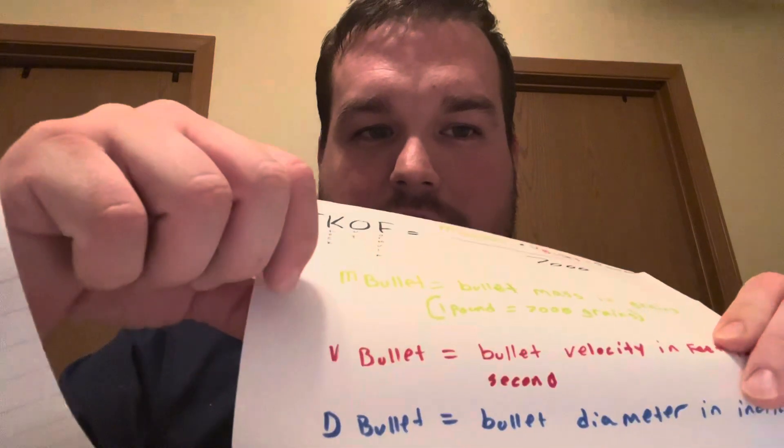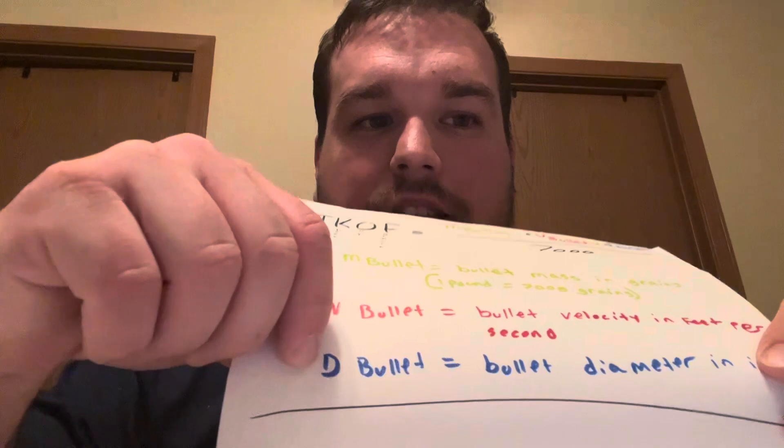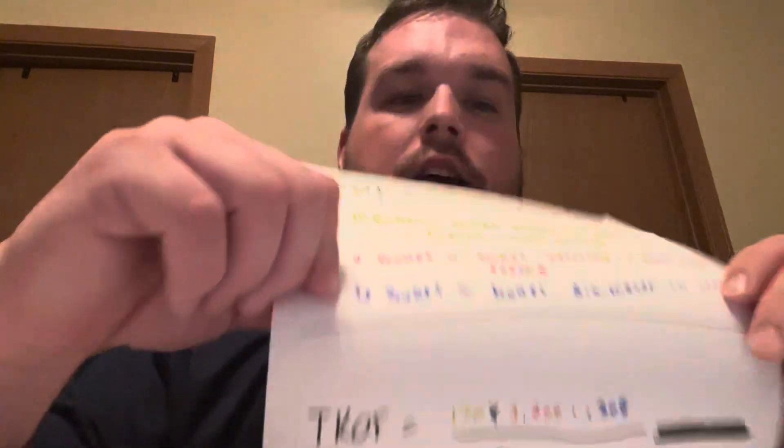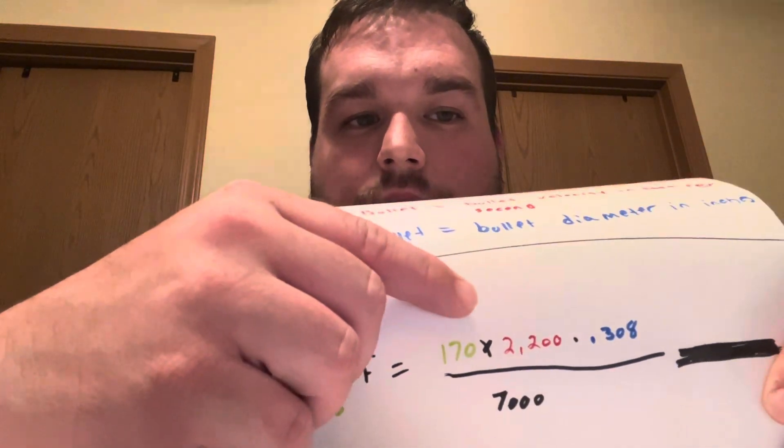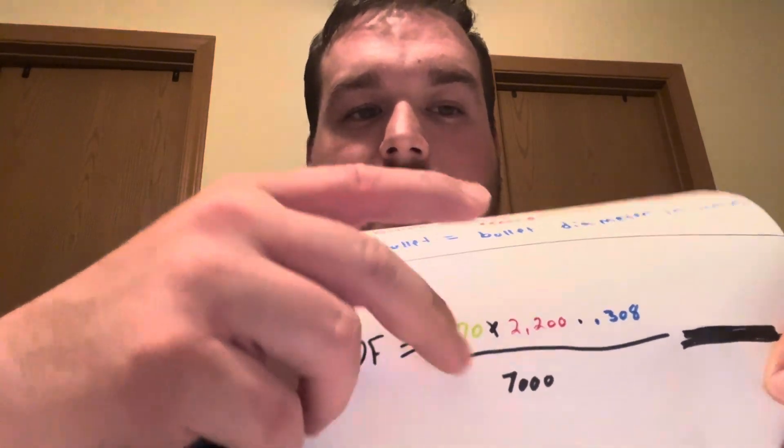With that being said, M is your mass, V is your velocity, and D is your diameter. In that case, it's 170 times 2,200 times 0.308 divided by 7,000, which gives the answer of 16. The scale goes from 0 to 150 for stopping power. Obviously, you would think 16 is not that great of a stopping power round, which — it depends on what type of game you're hunting. It could be really good.